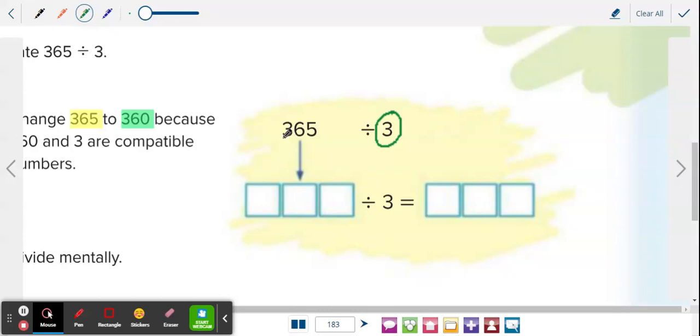This trick tells you to look only at the first two numbers 36 and imagine for one moment that the 5 does not exist. Imagine that you are dividing just 36 divided by 3.